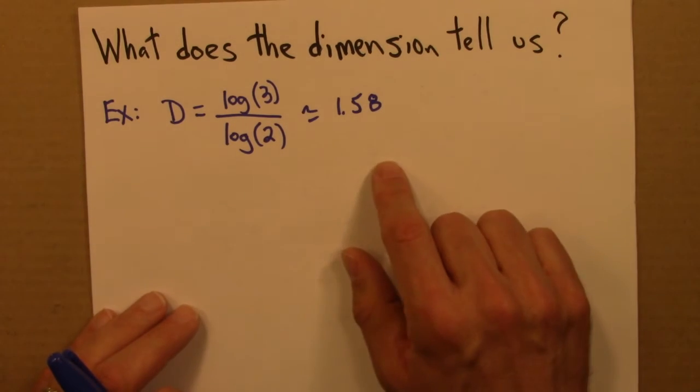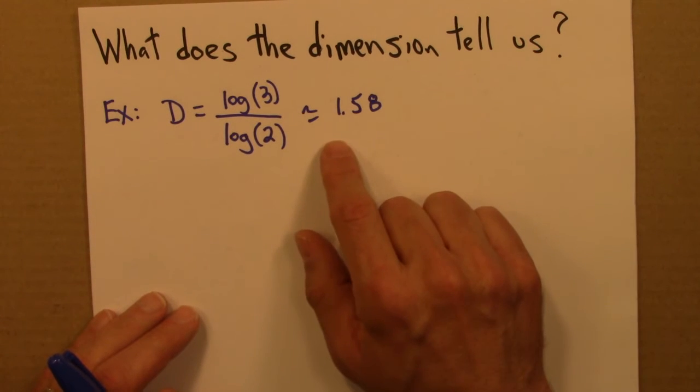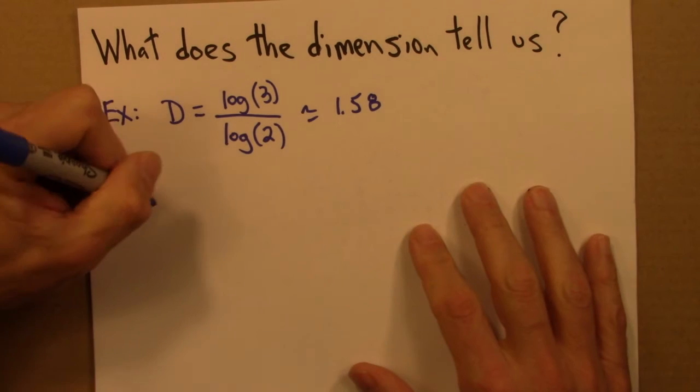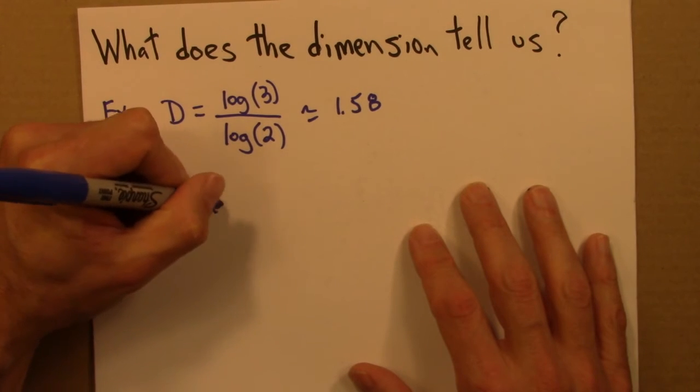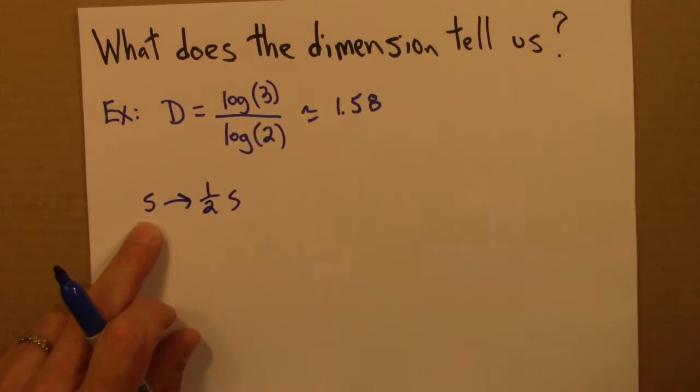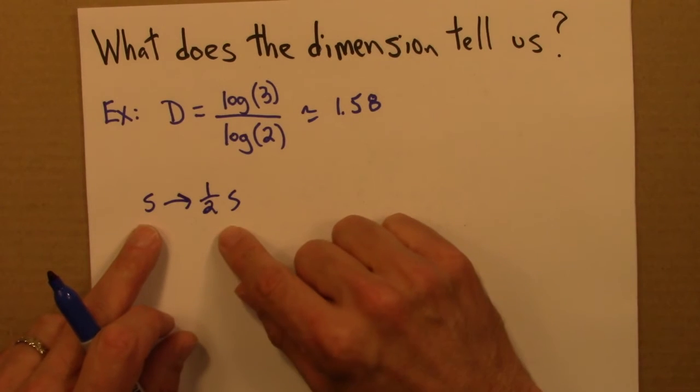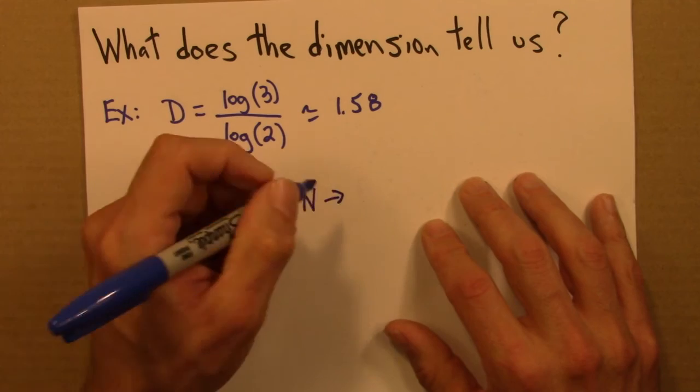Alright, let's think about box counting dimension. What would this mean? Well, this means that suppose we take S and we replace it with half S. So we have some box side, maybe it's a quarter, maybe it's an eighth, and then we make that smaller. We shrink it down by half.